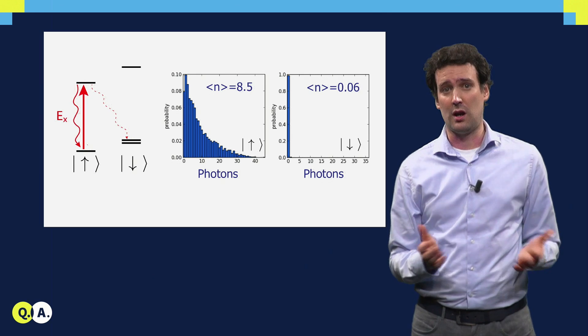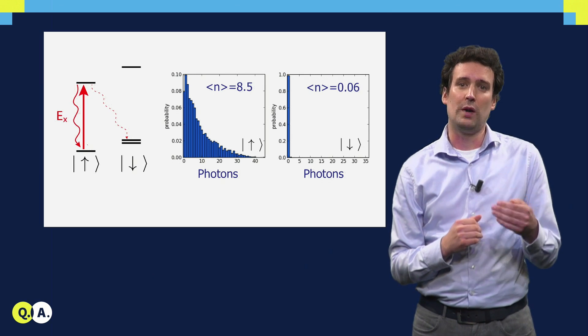If the spin is down, it stays dark. So in this way, we can read out what the spin state is.